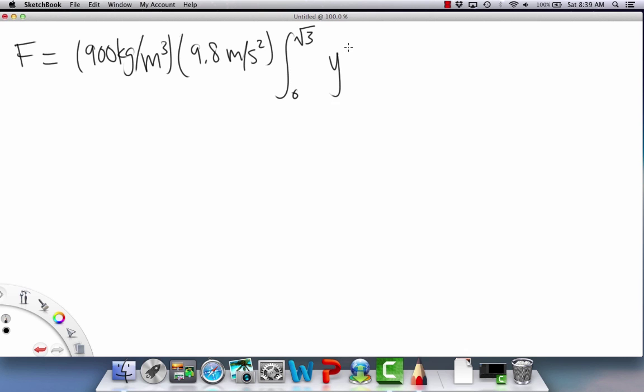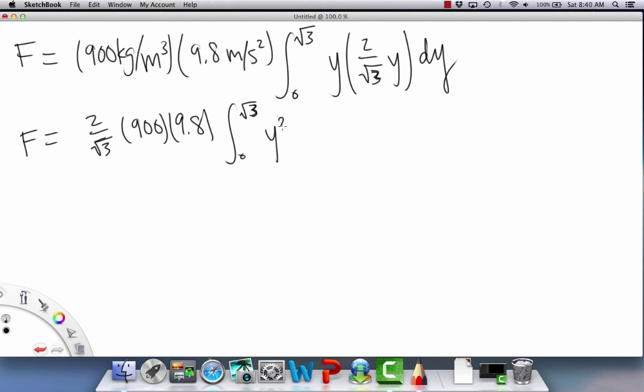And then we have our y times f of y, which we found was 2 over radical 3 y, and then dy. So now we have a normal integral. What we can do is take out the 2 over radical 3, so we're going to get 2 over radical 3 times 900 times 9.8, and then from 0 to radical 3 of y squared dy. This is a pretty simple integral from here on out.